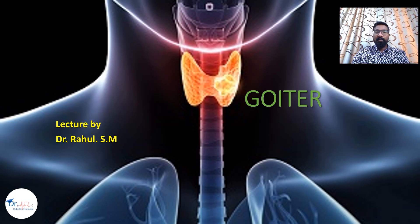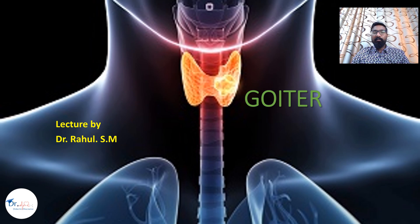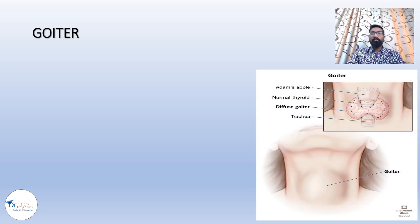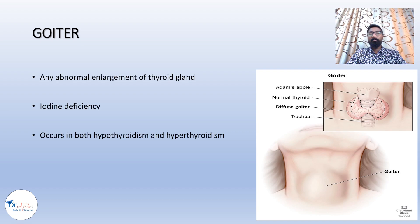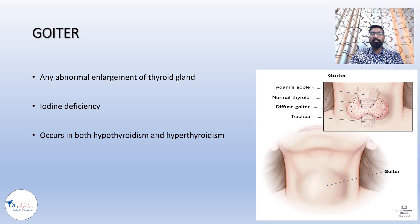Good day guys, this is Dr. Rahul Assam. In this video we'll discuss goiter — its causes, classification, diagnosis, and treatment. To start with the definition: goiter is any abnormal enlargement of the thyroid gland. It is usually caused by iodine deficiency and it occurs in both patients with hypothyroidism and hyperthyroidism.